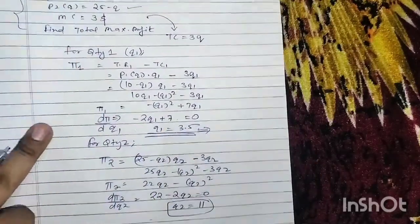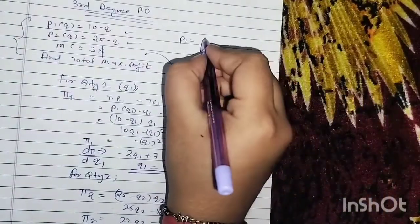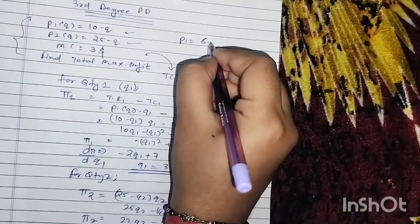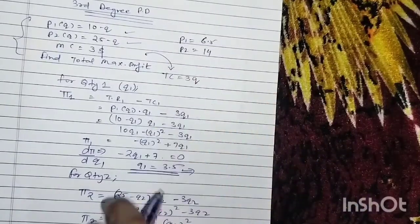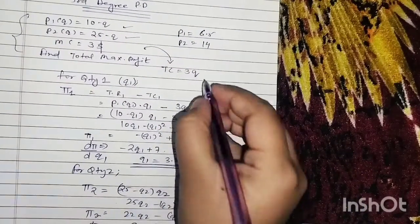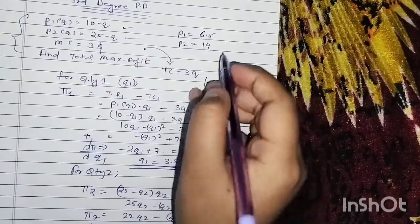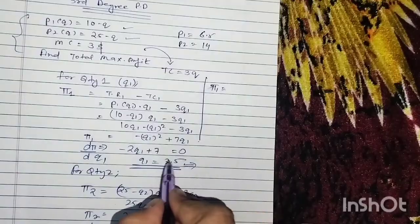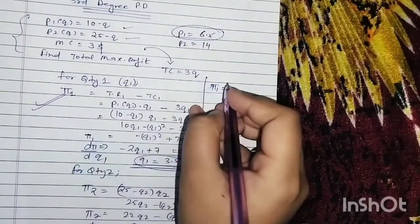We are getting P1 here is 6.5 and P2 here is 14. So you can find out π1 also by putting the value of Q1 and P1 in this.